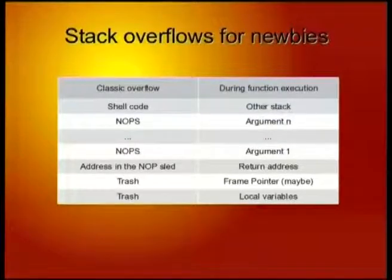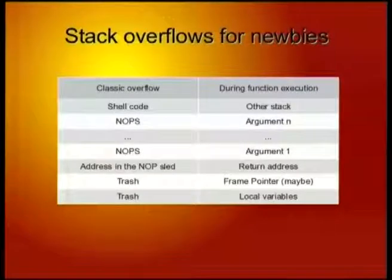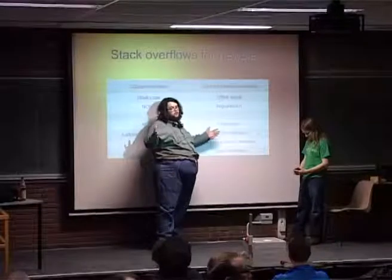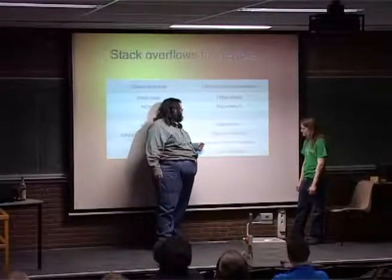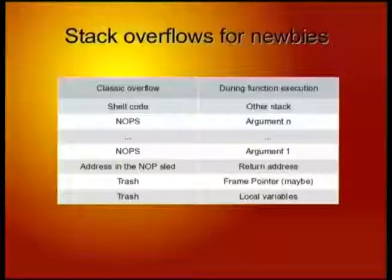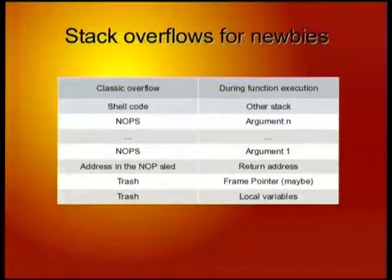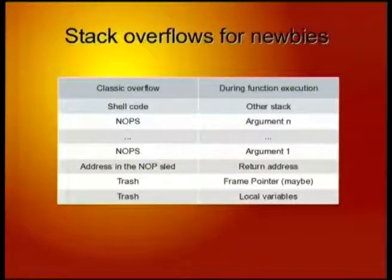What's the problem? The problem is that if we have some local variable here that is a buffer — a char vector — we can start writing past the frame pointer, then the return address, then the arguments. For example, if we use 'gets' — because nobody here uses gets, do you?